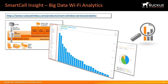Ruckus SmartZone controllers provide a range of reporting options for administrators. However, for very large-scale deployments with hundreds, thousands, and tens of thousands of access points, administrators often require deeper level information. SmartCell Insight is designed for large-scale service providers and integrators, and provides administrators the means to extract high-level performance analytics and monitor key performance indicators for mission-critical networks.